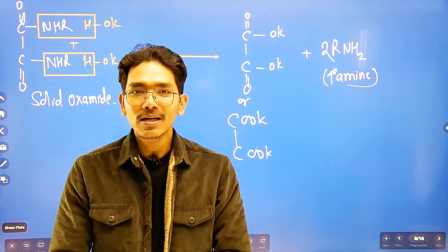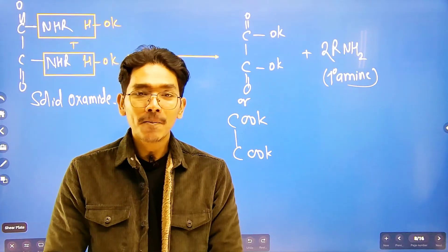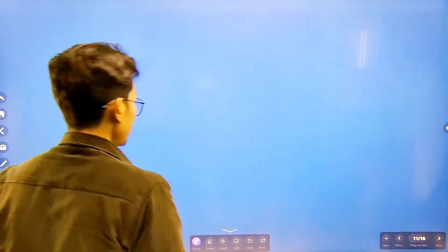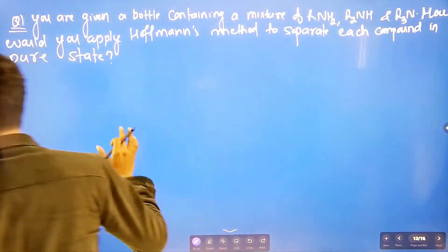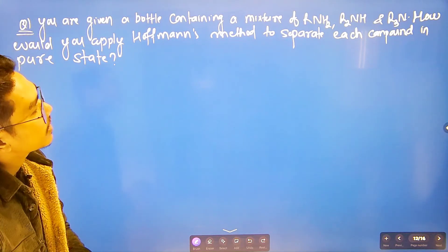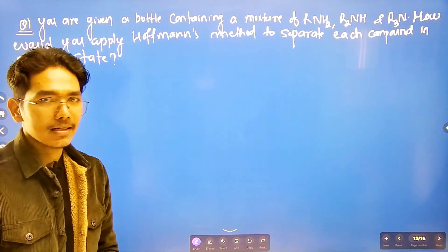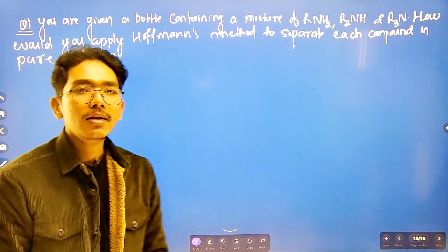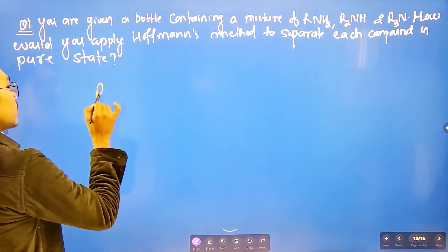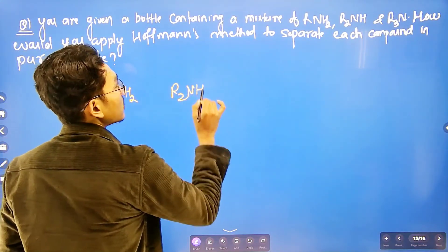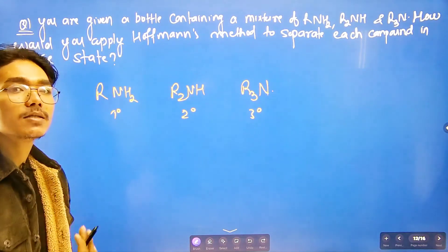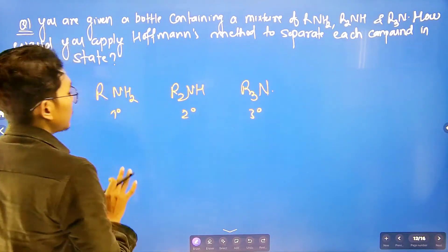Now, let's see practice questions. The question is: you are given a bottle containing a mixture of R-NH2, R2NH, and R3N. How would you apply Hoffmann's method to separate each compound in pure state? Identify: R-NH2 is primary, R2NH is secondary, R3N is tertiary amine in the mixture.